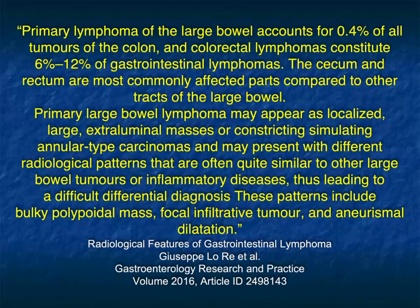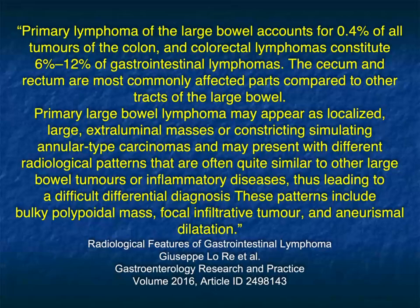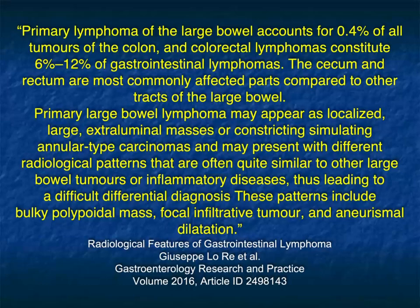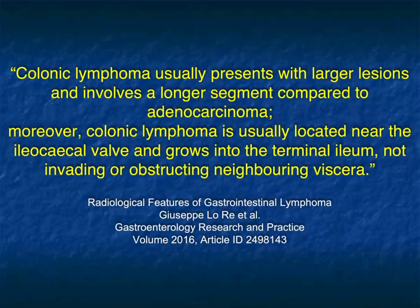We think about lymphoma of the stomach and small bowel, but we don't typically think about colonic lymphoma — yet it does occur. I've seen two cases in the last two months, so it's not that rare. Primary lymphoma of the large bowel accounts for under 1% of all tumors of the colon, and colorectal lymphomas constitute up to 12% of GI lymphomas. The cecum and rectum are the most frequent areas. Primary large bowel lymphoma can appear as localized large extraluminal masses, or constricting masses simulating annular-type carcinoma, and may mimic other large bowel tumors or even inflammatory disease, making it a very difficult diagnosis.